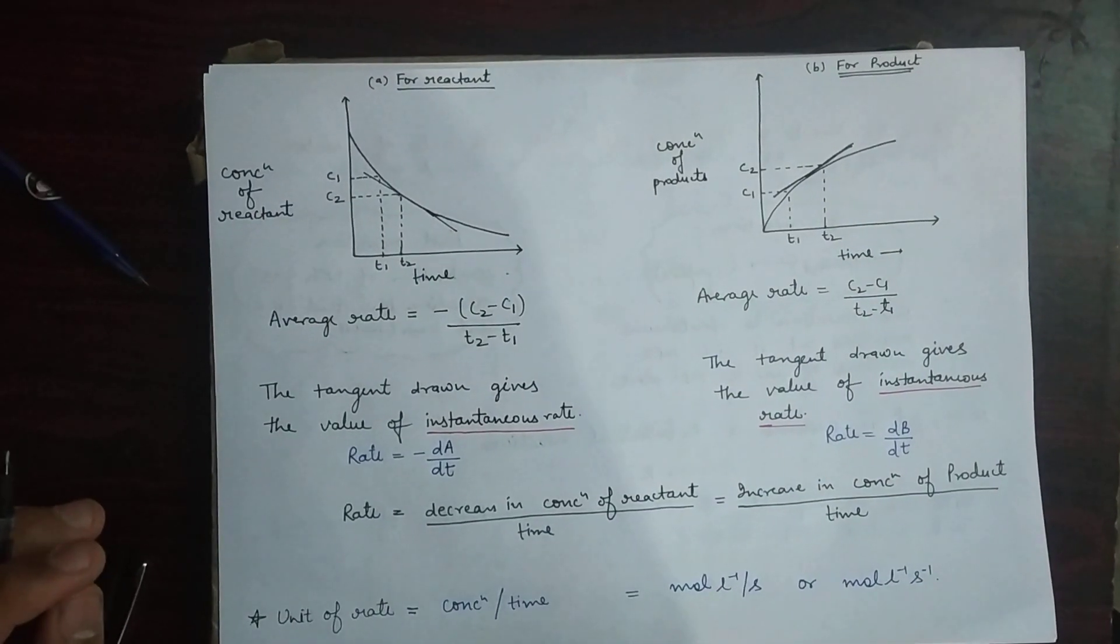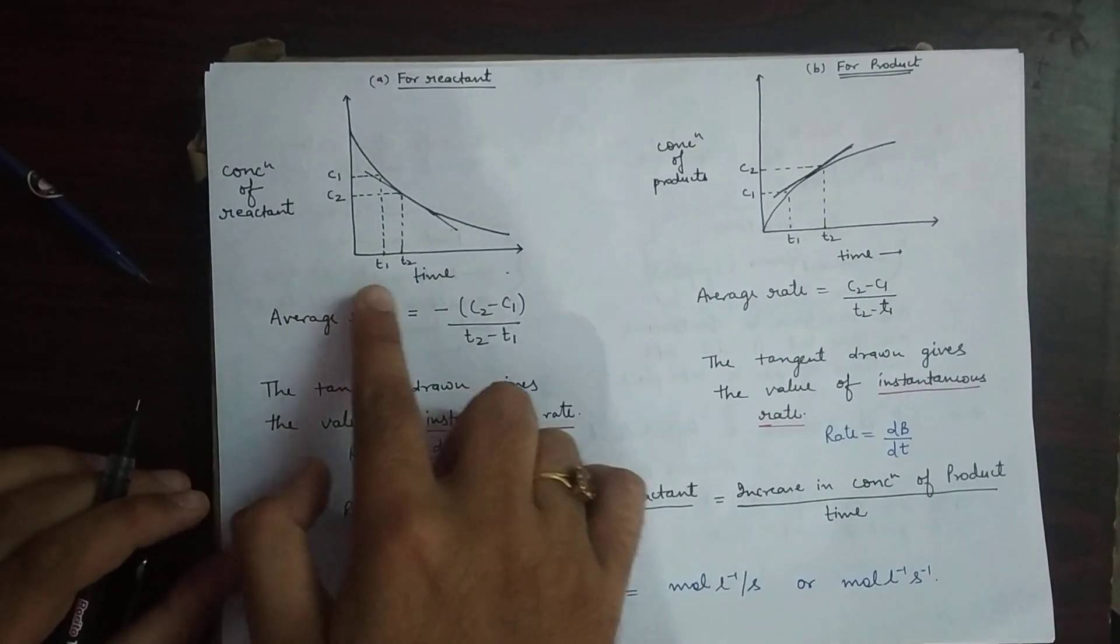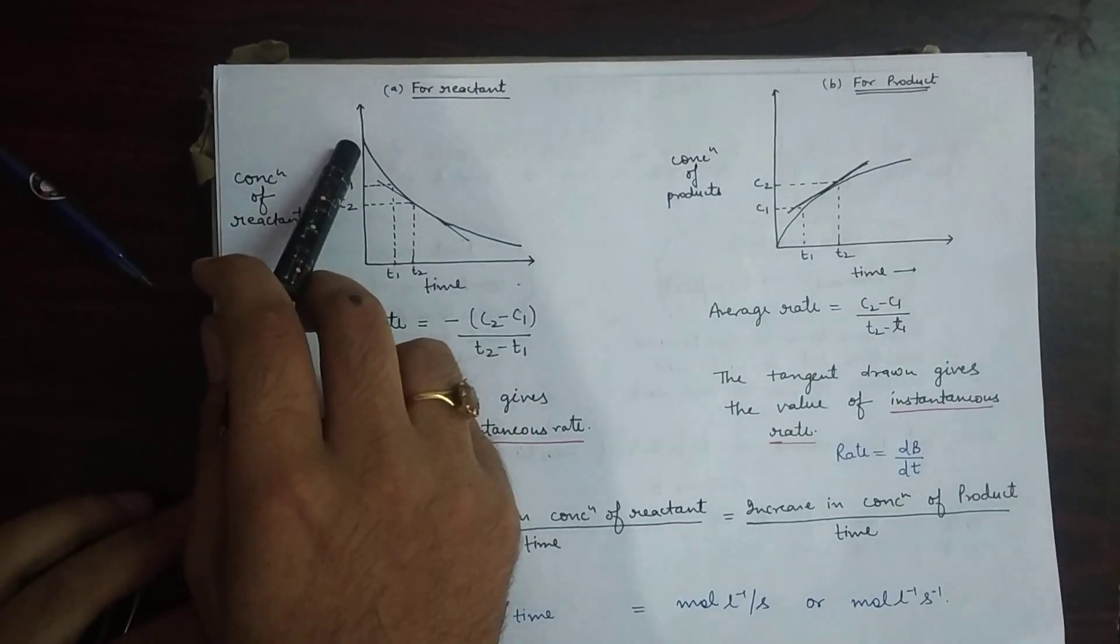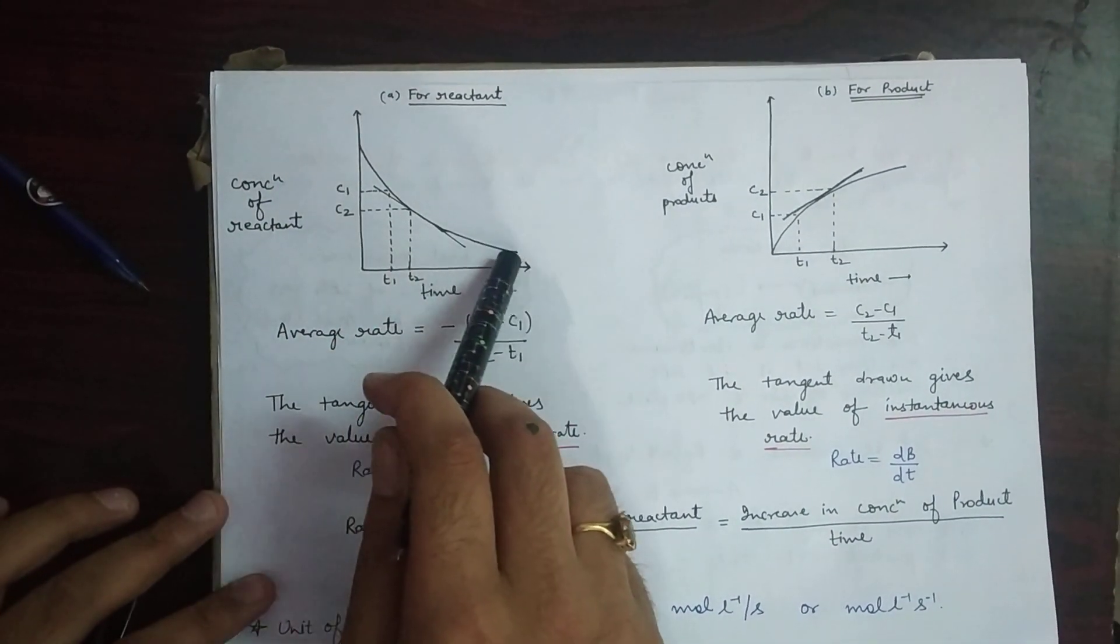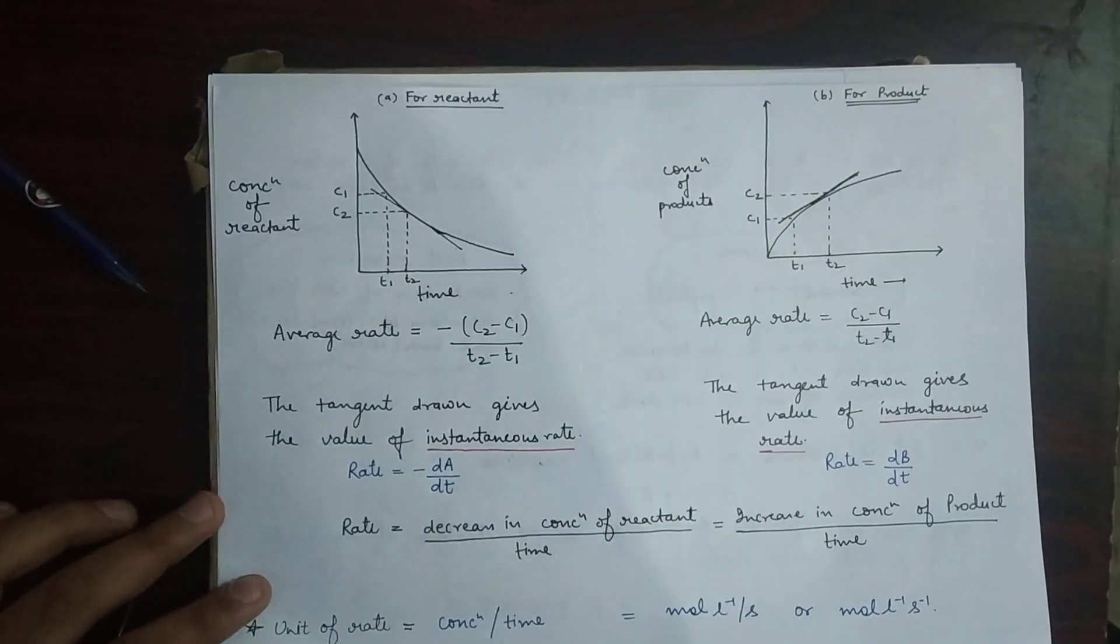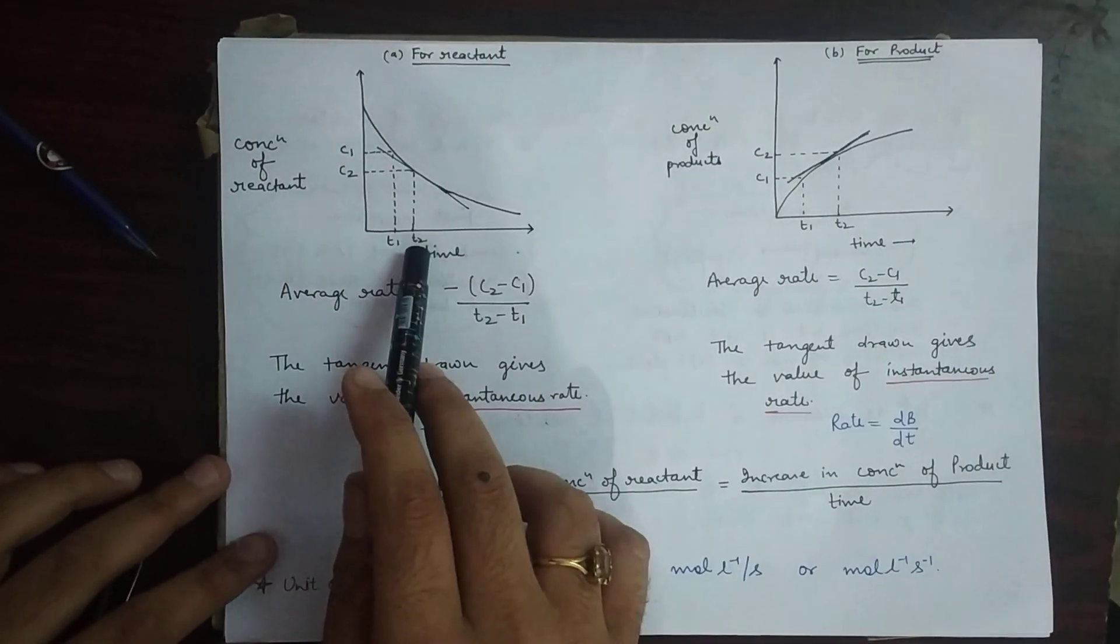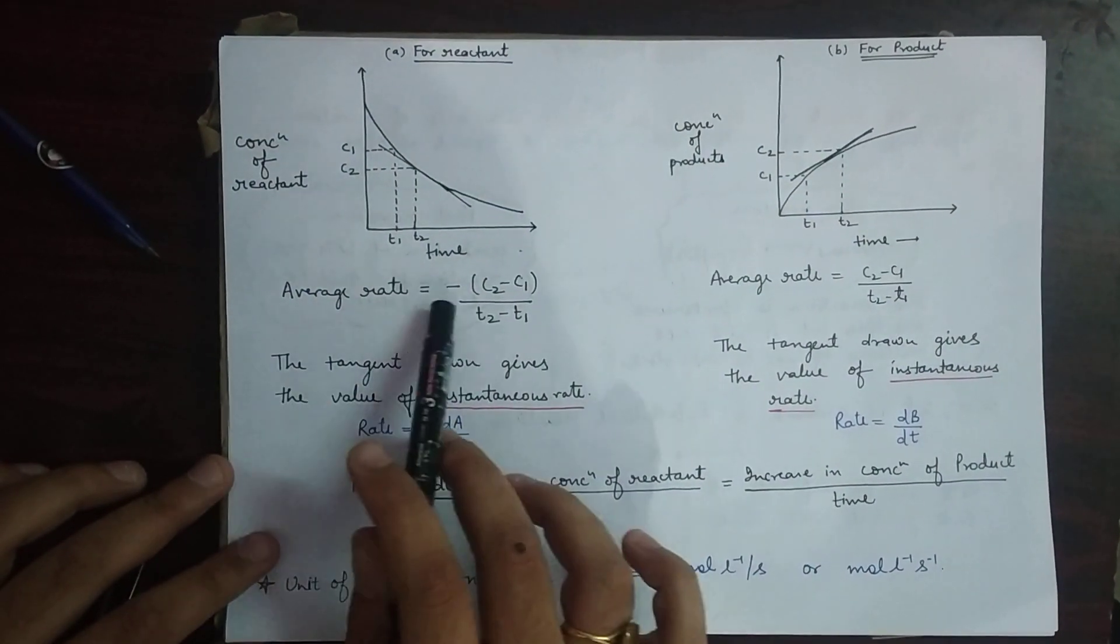With the increase in time, with the course of reaction, the graph shows the decrease in the concentration of reactant. Now, taking the two values C1 and C2 at time T1 and T2, we have calculated the average rate.